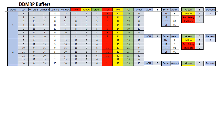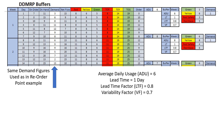Here we have the DDMRP spreadsheet. I have copied and pasted exactly the same random demand generated in the reorder point example into the DDMRP simulation. Starting off with the same average daily usage of 6 and a lead time of 1 day, we can start to construct the buffer. We have a very short lead time, so I will use a high lead time factor of 0.8. I am unsure about the variability, so I'll use a high variability factor of 0.7 and see how that works.